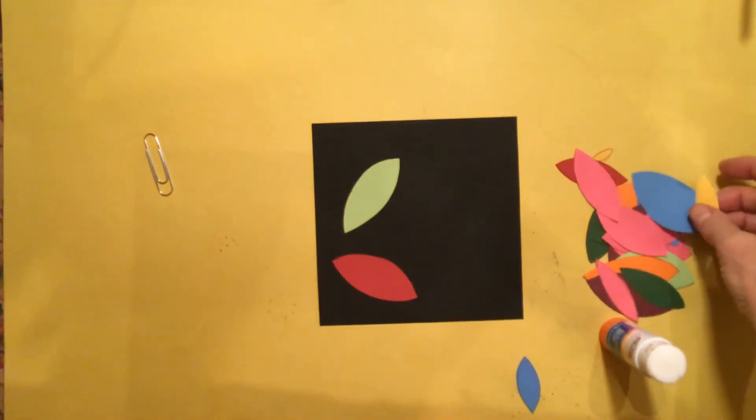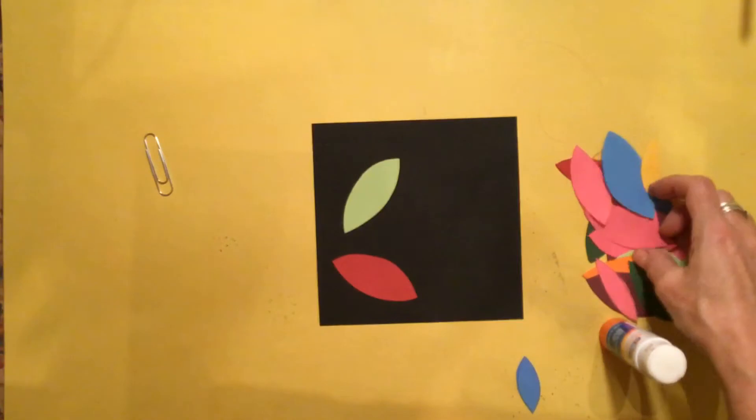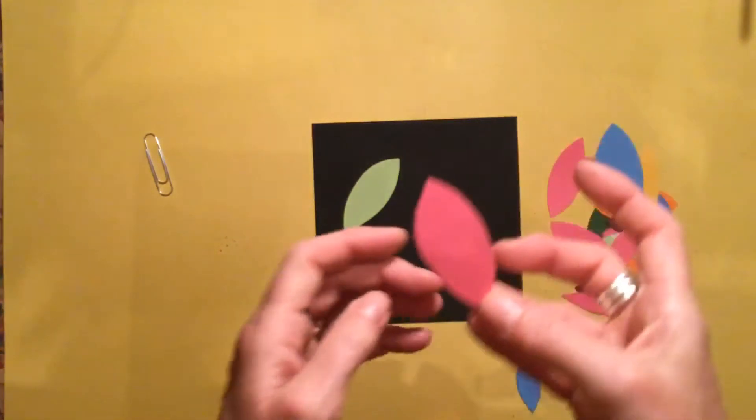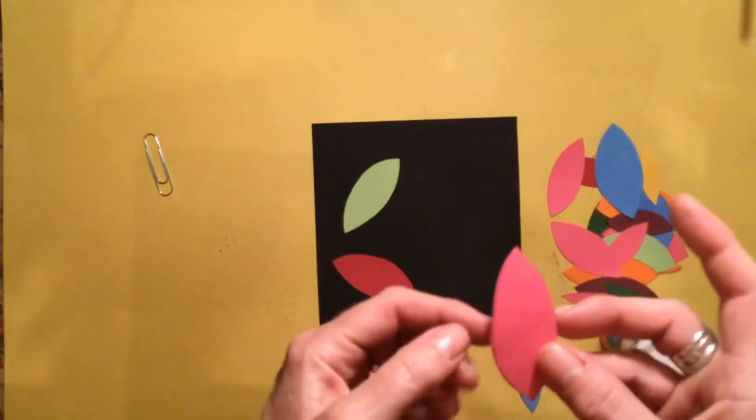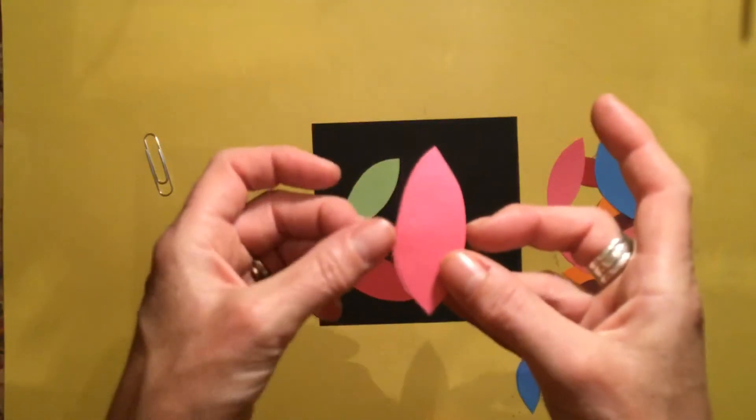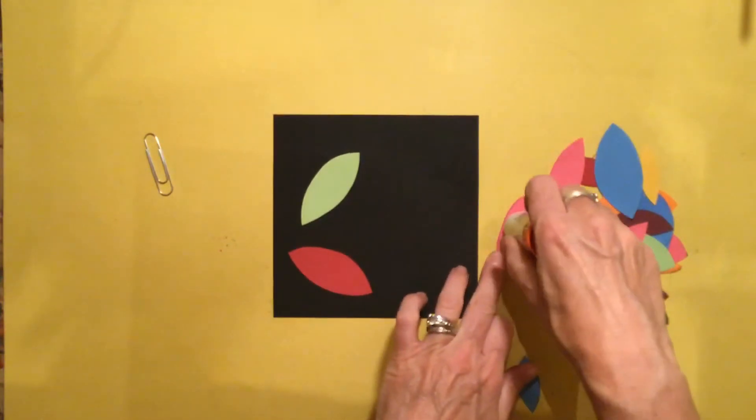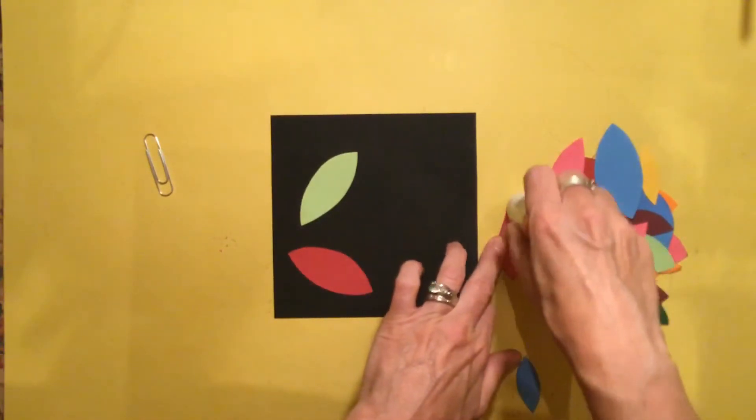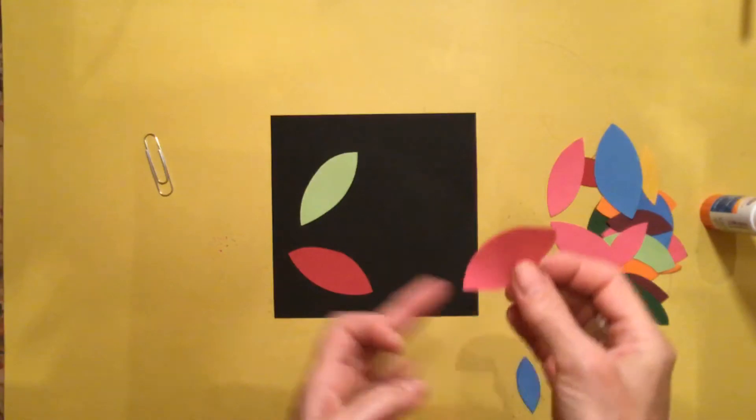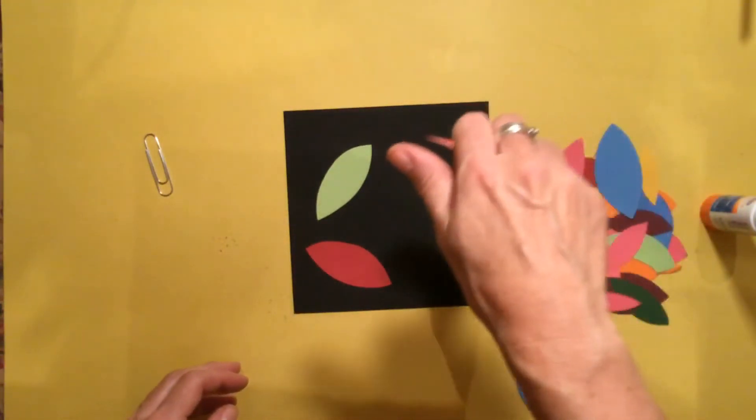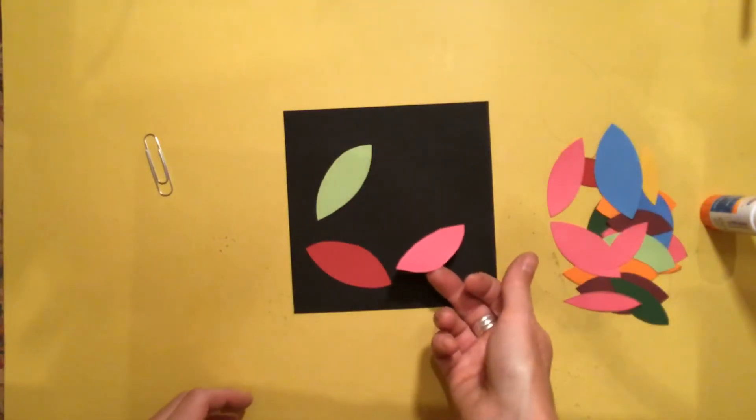Then I'm going to pick another leaf, and again I'm going to check to see—this is the side where I can see my pencil. So I'm going to put some glue, and again we're just taking our time, the leaf is floating, coming down, and it lands right here.